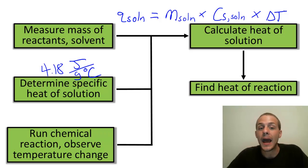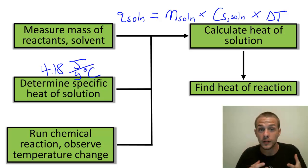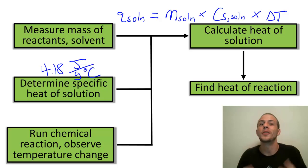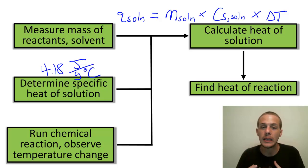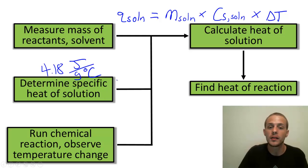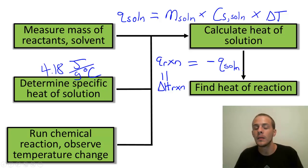Once you know that, you can find the heat of reaction. We make an important approximation: the reactants and products are the system, and the solution is the only component of the surroundings. Because of the insulated environment, this is a pretty good approximation. All the heat absorbed by the solution equals the heat released by the reactants as they become products. So the heat of reaction — which under constant pressure equals delta H — is simply the negative of the heat of the solution: q_rxn = -q_soln.